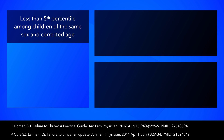Failure to thrive should be considered when a child is less than the 5th percentile among children of the same sex and corrected age for weight, weight velocity, weight for length, length, or BMI.